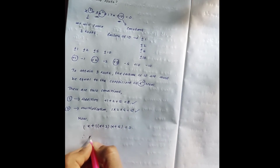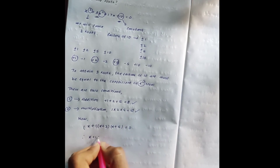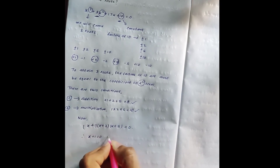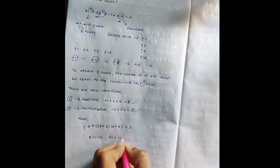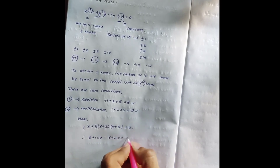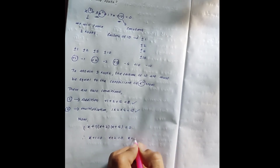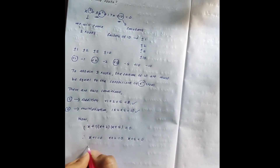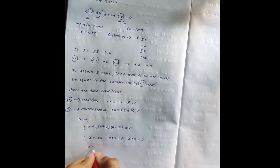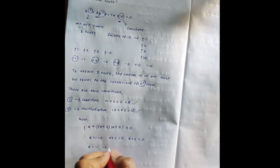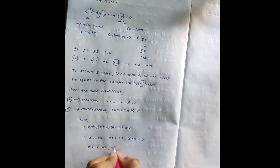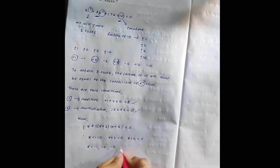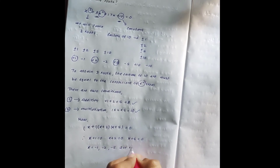So now, x plus 1 is equal to 0, x plus 2 is equal to 0, x plus 5 is equal to 0. Therefore, x is equal to minus 1, minus 2, minus 5. We now have the three roots of the cubic equation.